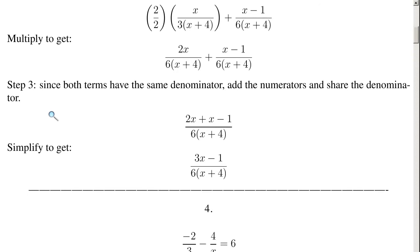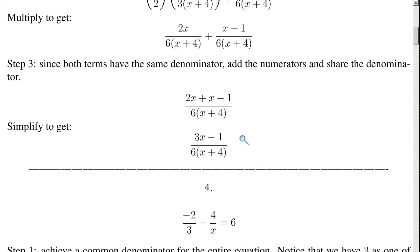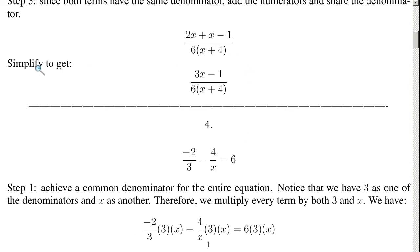Step 3: since both terms have the same denominator, add the numerators and share the denominator. Because these two terms have the same denominator, we just use that denominator. We take this numerator and this numerator and add them: 2x plus x minus 1. For the denominator, we just use that common denominator. Our last step is simply to add 2x plus x, so we have 3x minus 1 divided by 6 times (x plus 4).